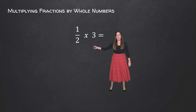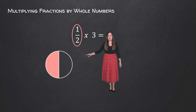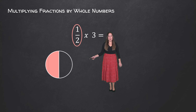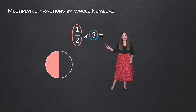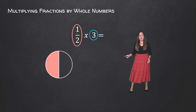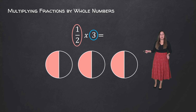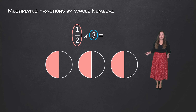So what we're going to do first is take our fraction and represent that. Here we have a model of 1 over 2 because we have one part shaded out of two equal parts, and in order to multiply that by 3 we have to take that model and represent it three times — and that's what it means by multiplying 1 over 2 by 3.